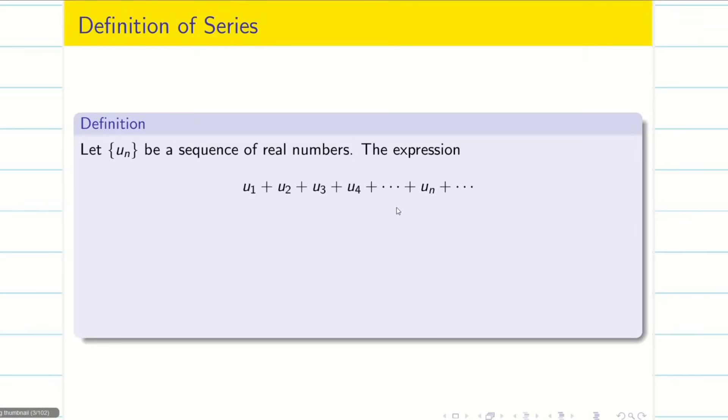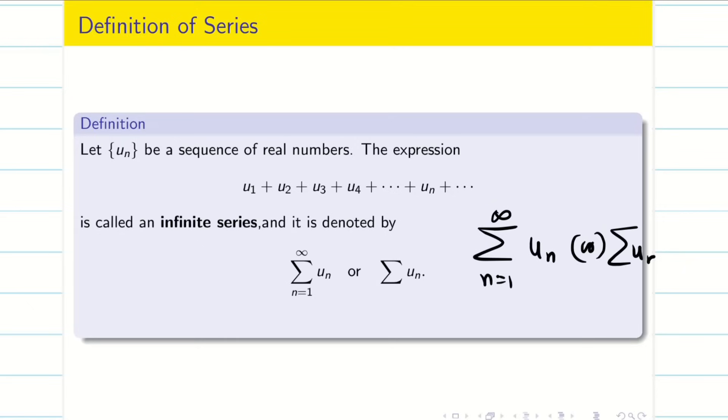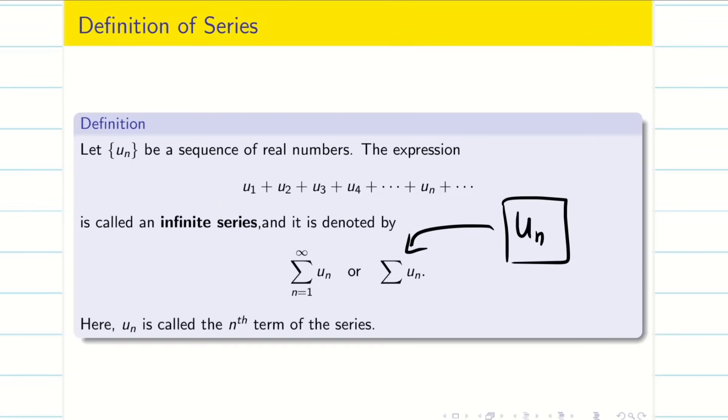And I am going to add all these things up to infinity. Then it is called an infinite series. It is denoted by summation n equal to 1 to infinity Un. Or we simply take summation Un. Here Un is called the nth term of the given series.